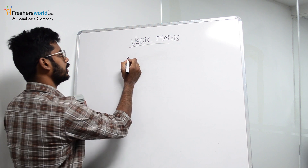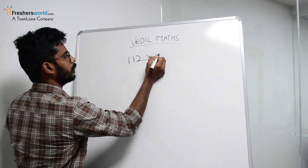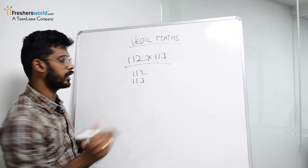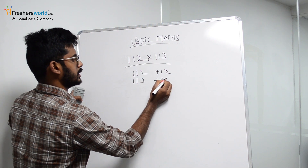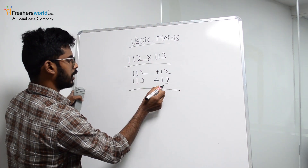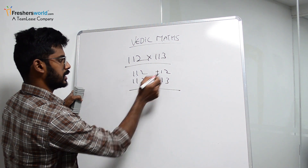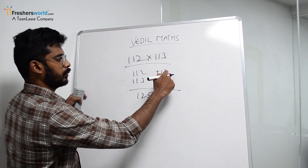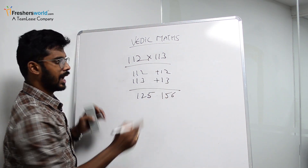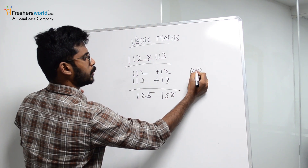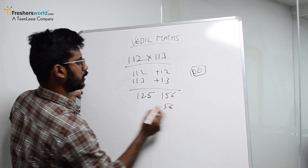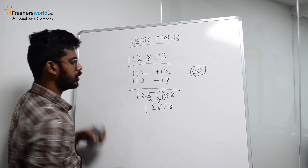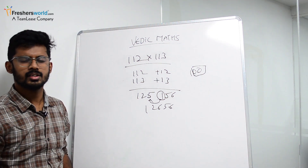You can also use base 100 for numbers like 112 into 113. Write them vertically — how much closer to 100? Plus 12 and plus 13. Add 112 plus 13 or 113 plus 12 — same answer, which is 125. Since base is 100, two spaces are filled: write 56 as is, carry 1, so 1 plus 125 gives 12656. That's the answer!